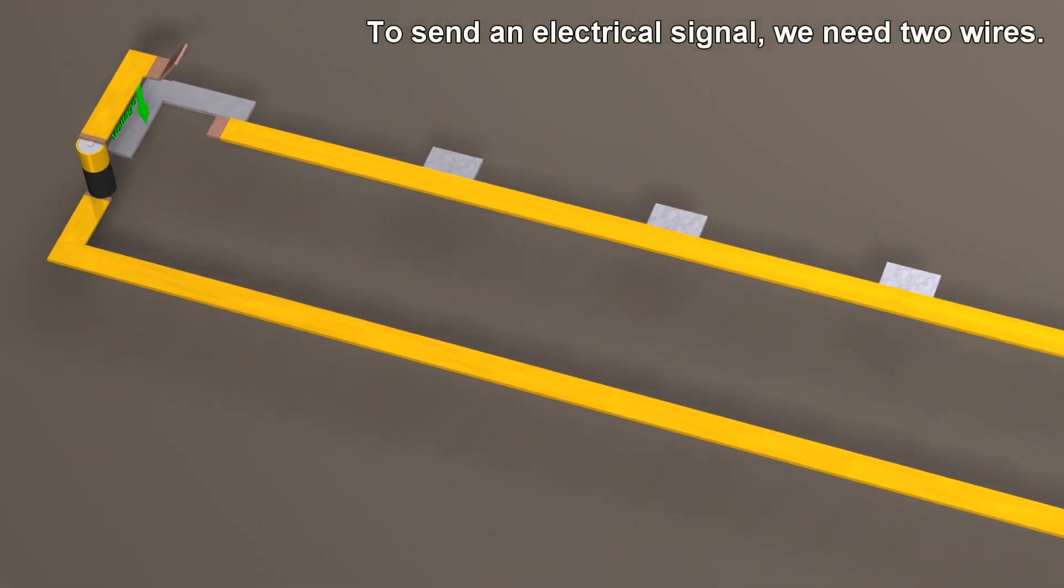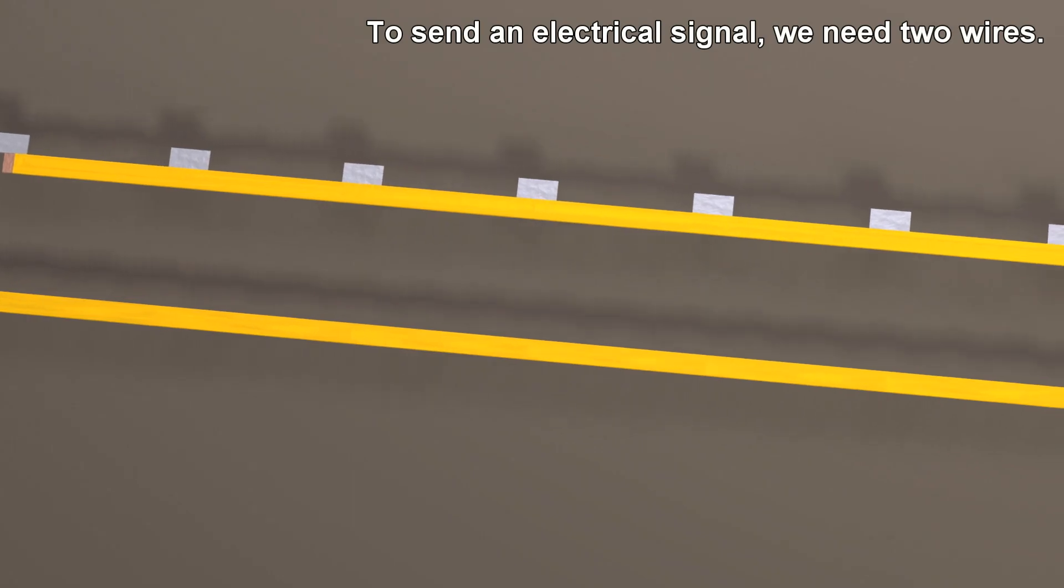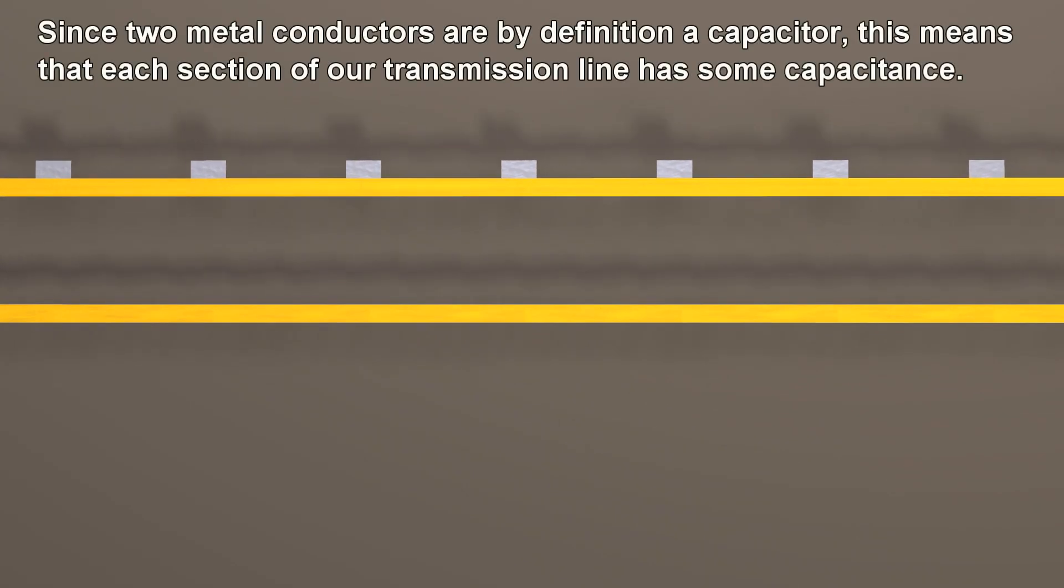To send an electrical signal, we need two wires. Since two metal conductors are by definition a capacitor, this means that each section of our transmission line has some capacitance.